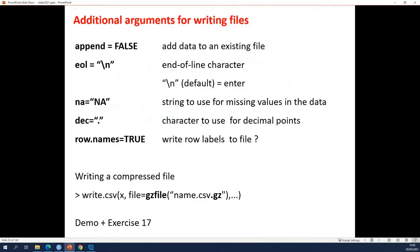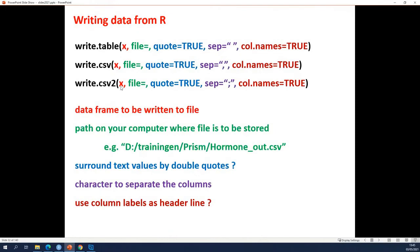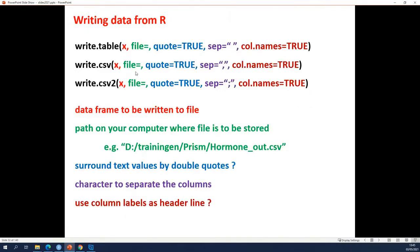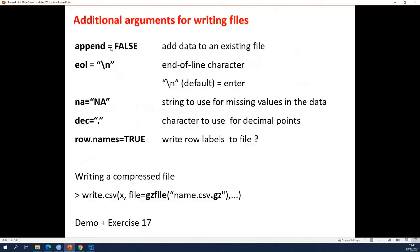A few additional arguments. This one is also useful: append. If you set append to true, then you can add the content of x here to an existing file. The default is false, which means that it will create a new file with the content of x. So it also means that when you put a name here of a file that already exists and you leave append equal to false, it will overwrite that file.